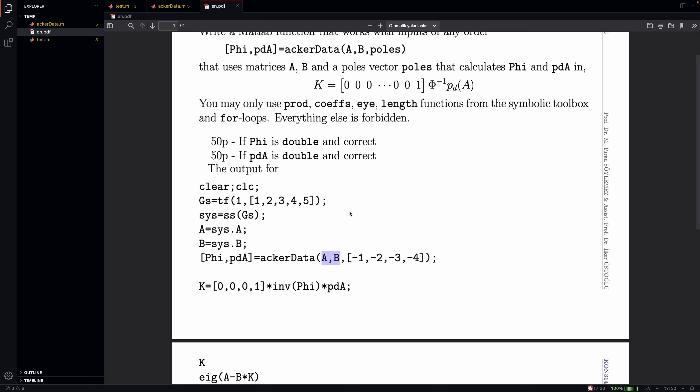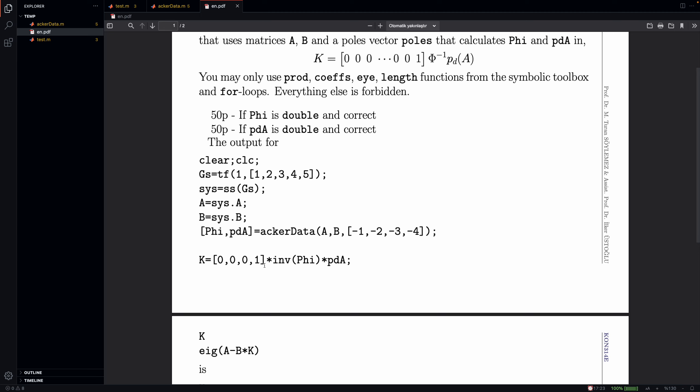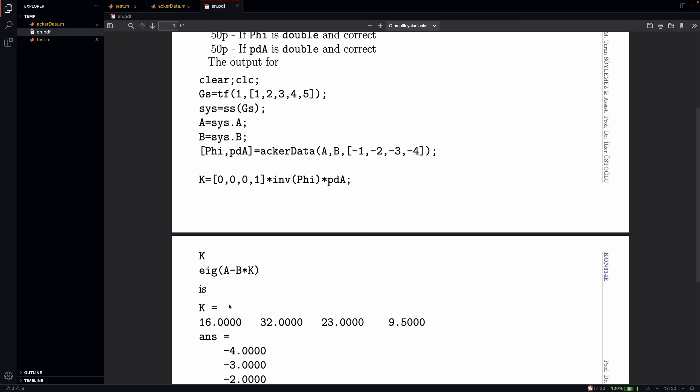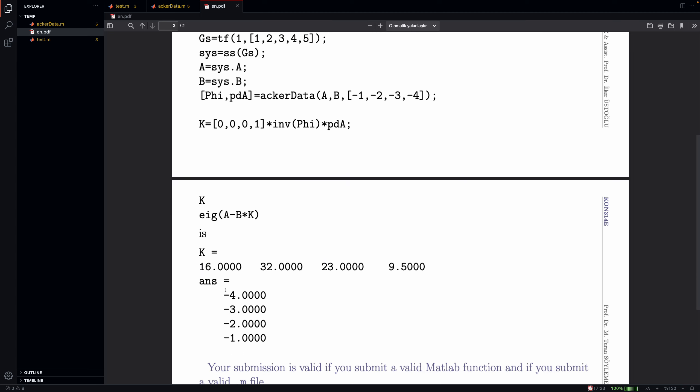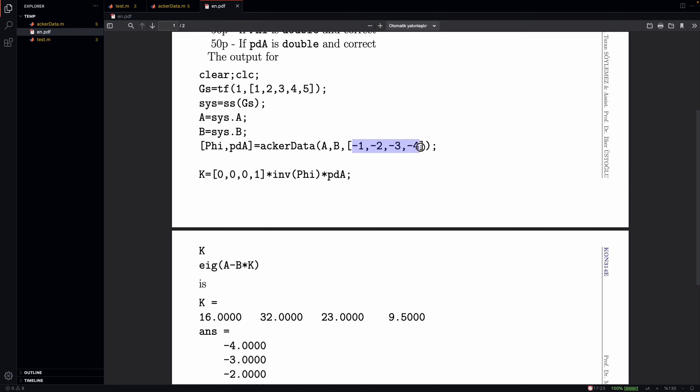which is for Ackermann formula data. Then we have the desired poles, it returns phi and PDA. When we use the Ackermann formula, we can obtain the K value, and we can see that the poles are at the location where they should be.